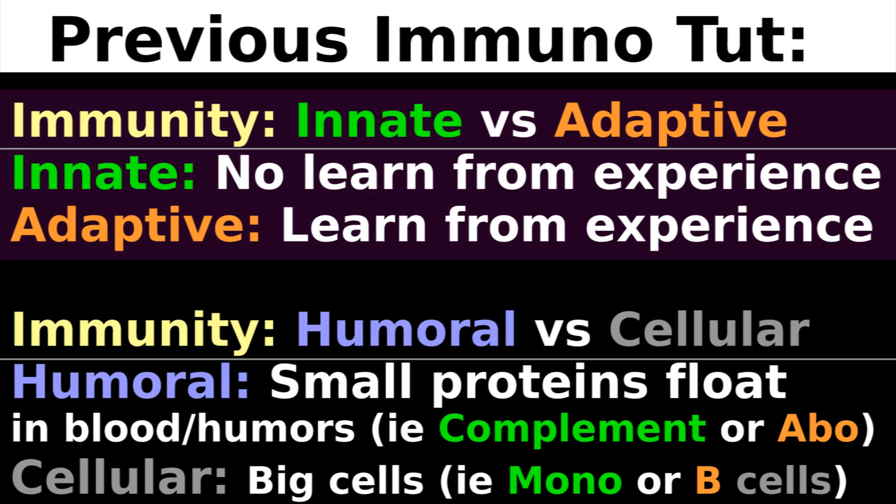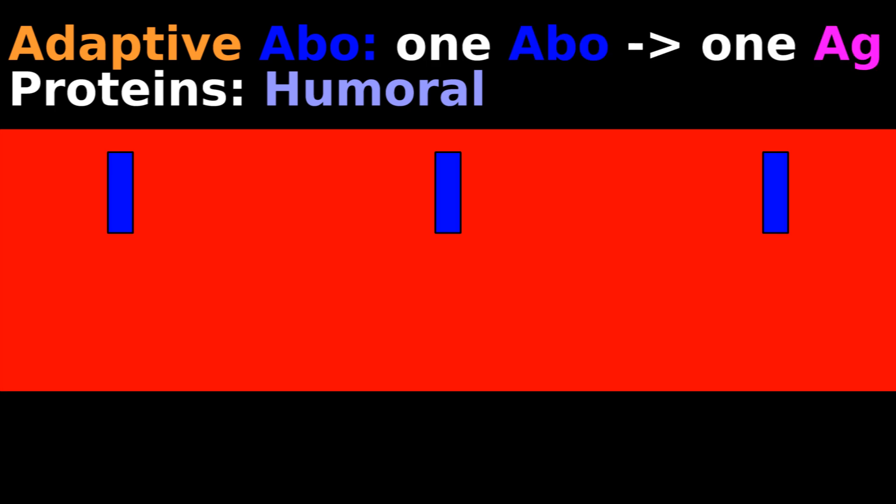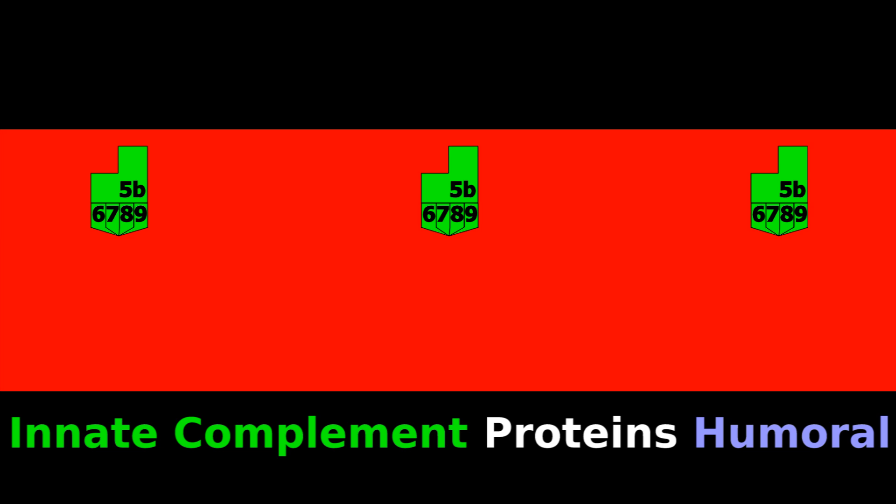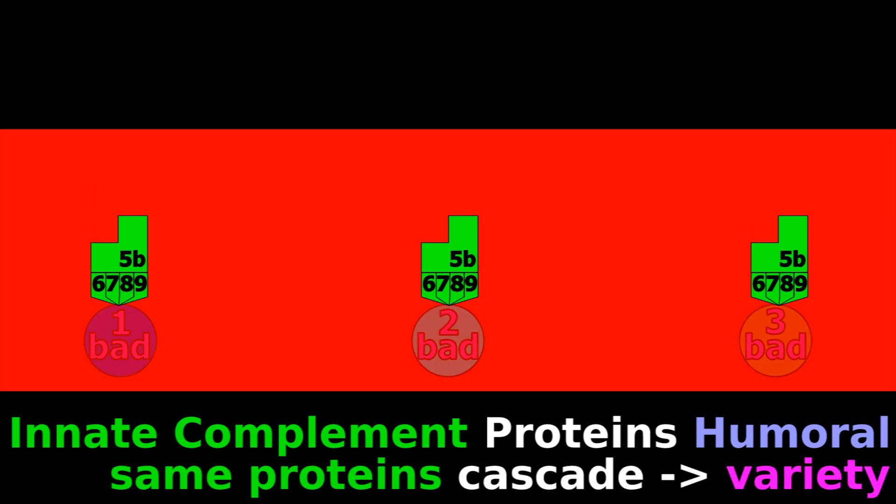A previous immunology tutorial said this: Adaptive antibody proteins float in the blood and specifically attack only one type of antigen. Innate complement proteins also float in the blood, but attack a variety of different pathogens.